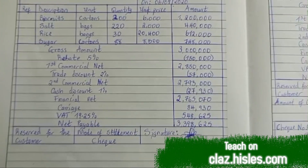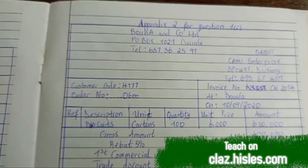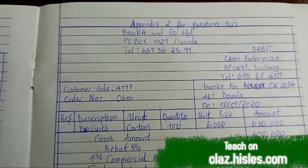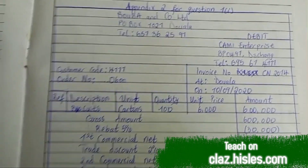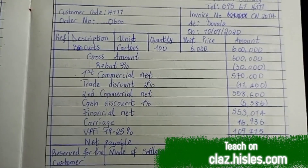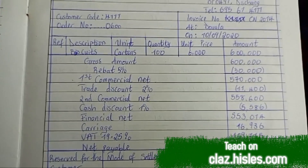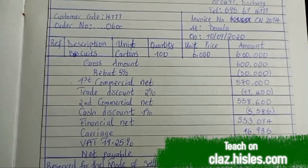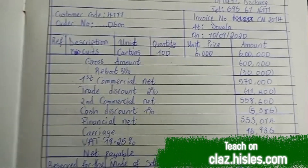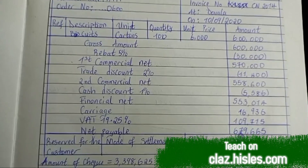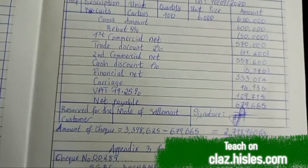The mode of payment was also checked. After that, we were asked to present the credit note, which was still represented by Booba. The credit note was presented because there were some goods which were not in good condition, so they had to be returned. The gross amount on the credit note was 600,000, with a rebate and every other thing.